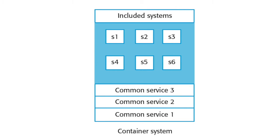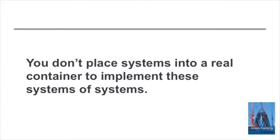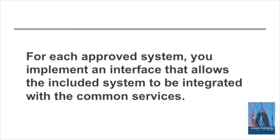This diagram illustrates the situation where we have three common services accessible by all of the systems in the container. The container as a whole makes up the system of systems. We don't have a real container to do this — what we're doing is implementing interfaces between the systems conceptually placed in the container and those common services. We need to implement interfaces between the common services and the related services in the individual systems to ensure that they can interoperate within the container.